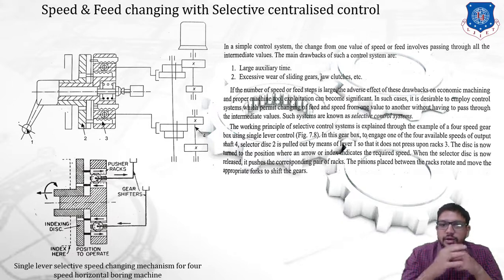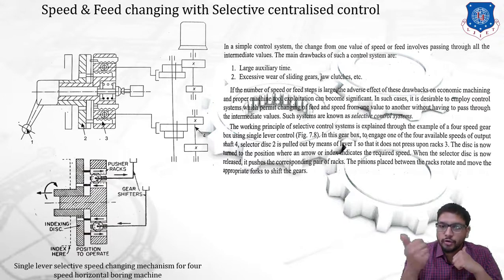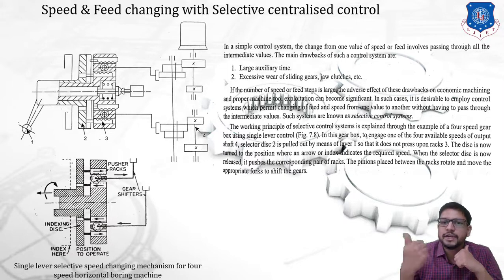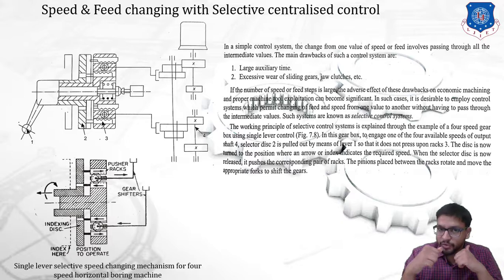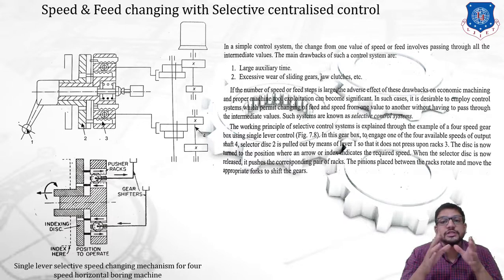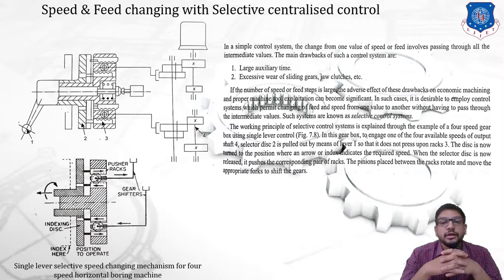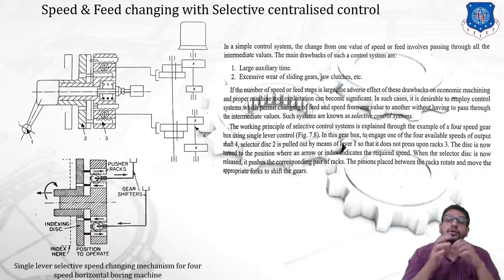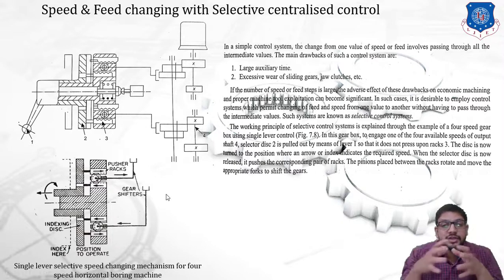The main drawback of such a simple control system is that first, large auxiliary time is required — auxiliary time is non-productive time including clamping and unclamping of a cutting tool, clamping and unclamping of a workpiece, and movement of a cutting tool before commencement of a cut. Second, excessive wear of sliding gears takes place. In such cases, it is desirable to employ a control system which permits changing of speed from one value to another without passing through intermediate values — such a system is known as a selective control system.